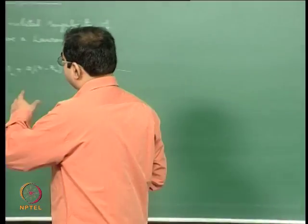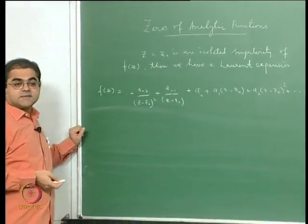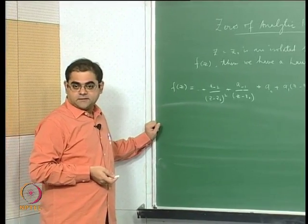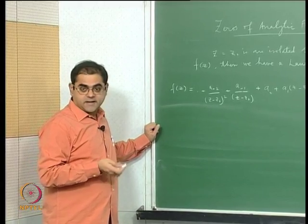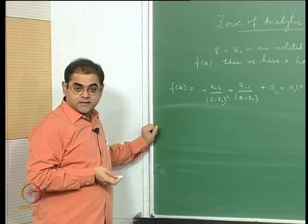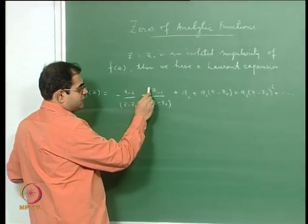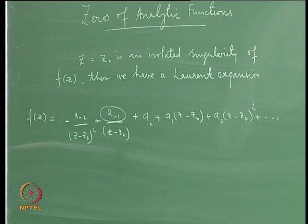The most important thing about singularities is what is called the residue of the function at an isolated singularity. That is the value of the coefficient a_{-1}, which is the coefficient of 1/(z−z0).